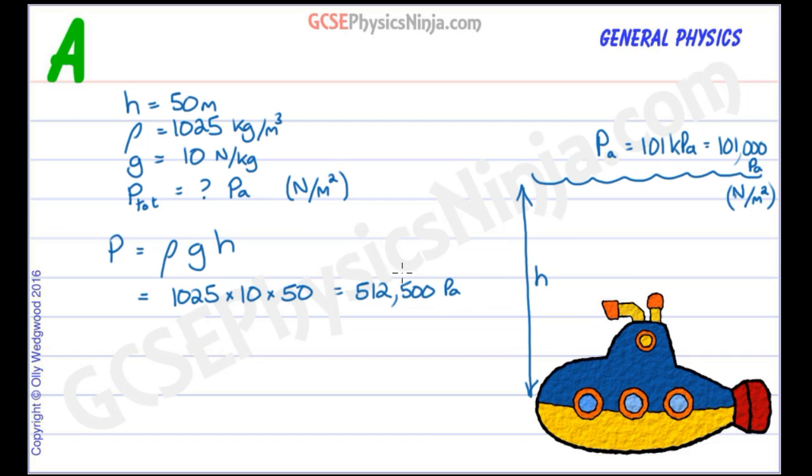Now that's the pressure due to the water only. We've now got to add on the atmospheric pressure, which is above the water, which is the air pressure pushing down on the water, which will be transmitted down here as well. So we can say that the total, the p tot, pressure is going to be 512,500 plus 101,000.